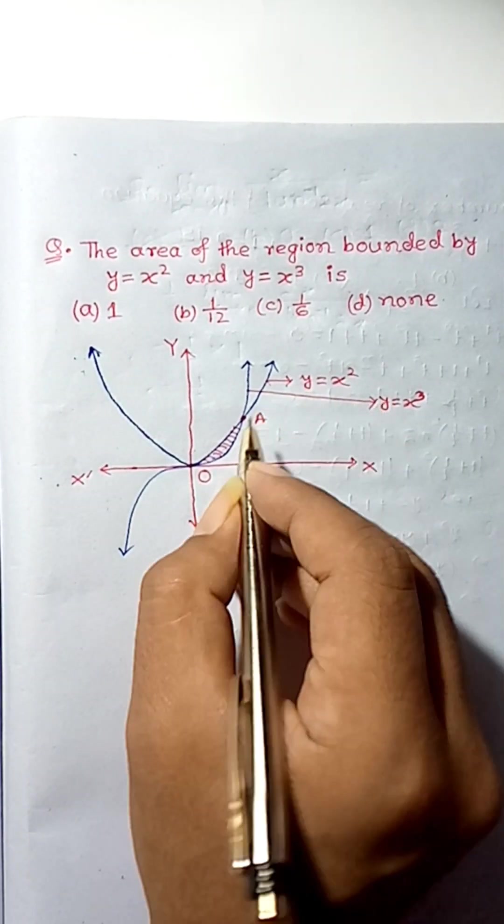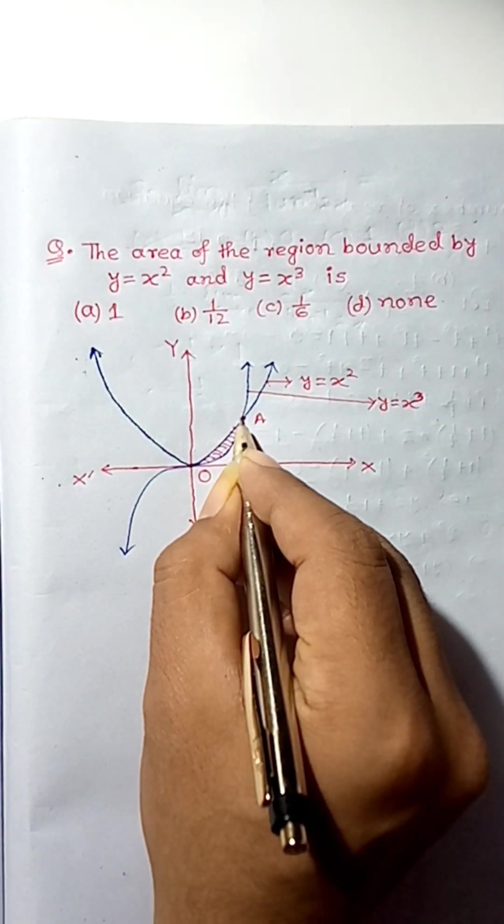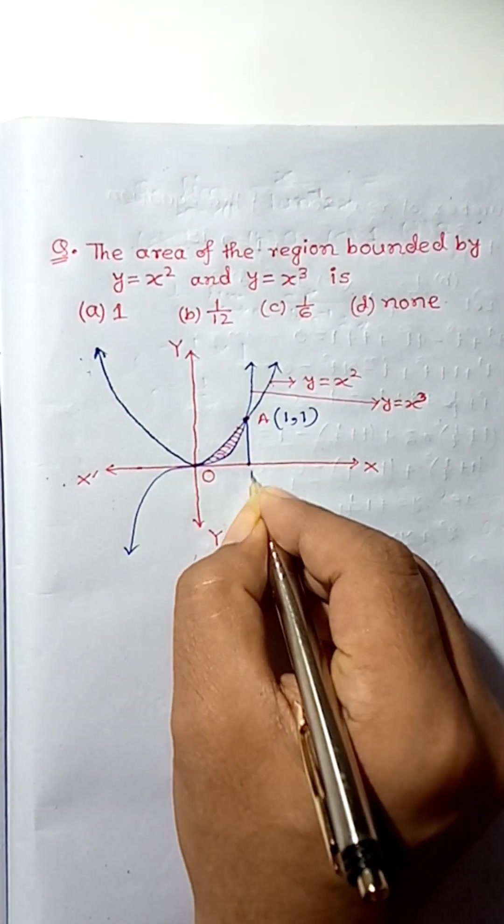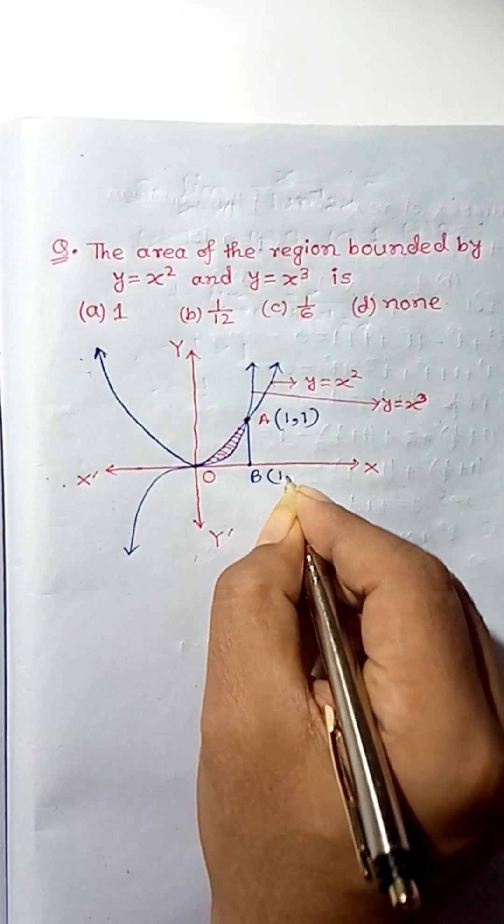Now, on solving these two curves, we will get the coordinate of point of intersection as 1,1. Let's say this point as B whose coordinates are 1,0.